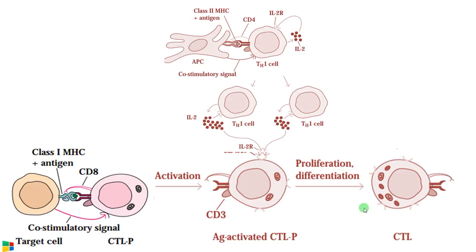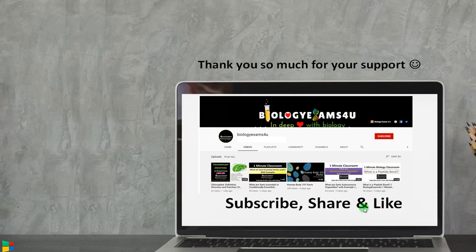That is why we call T helper cells the key players that mediate and regulate the third line of defense. In summary, in both the B cell and cytotoxic T cell cases, if T helper cells are involved, the response will be much more effective, causing proliferation and differentiation of both B cells and cytotoxic T cells. This is a summary of the third line of defense. If you want to add any more points, please add them in the comment section.